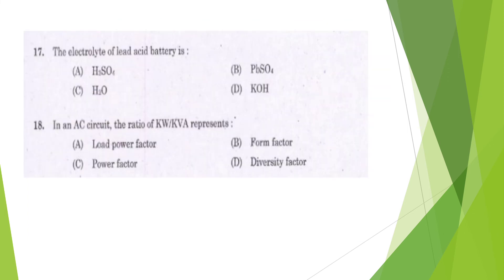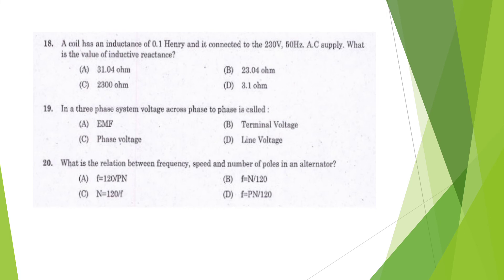Question 18: The electrolyte of lead acid battery is H2SO4. Question 19: In AC circuit, the ratio of KW by KVA is load power factor, form factor, diversity factor, or demand factor? Option C, power factor. KW by KVA is power factor.